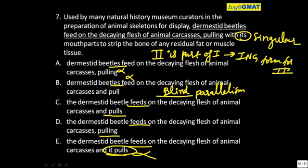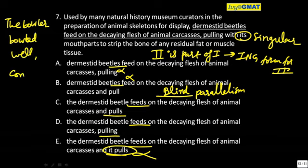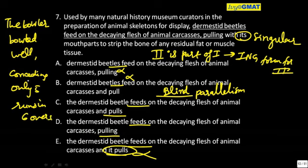For example — suppose I say: 'The bowler bowled, conceding only five runs in six overs.' Or should I say 'and conceded'? Please tell me — 'the bowler bowled very well, conceding only five runs in six overs' — or should I say 'and conceded'?